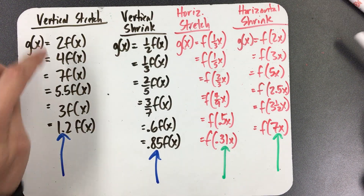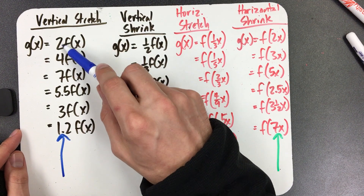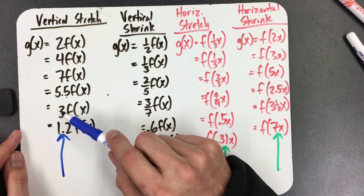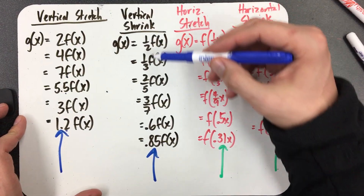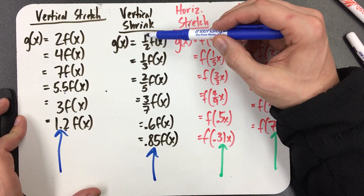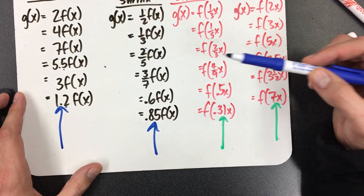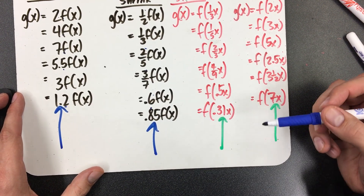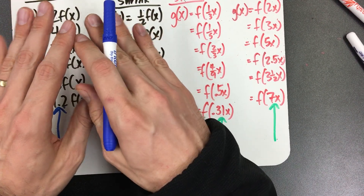How do you tell vertical stretch from shrink? You just look at how big the number is. Vertical stretch by a factor of 2, 4, 7, 5.5, 3, 1.2 — easy. All the numbers bigger than 1. And these others are decimals and fractions between 0 and 1 — that's your clue it's a vertical shrink. Vertical shrink by a factor of 1.5, 1.3, 2.5, 3.7, 0.6, 0.85. Vertical is so easy because what you see is what you get.